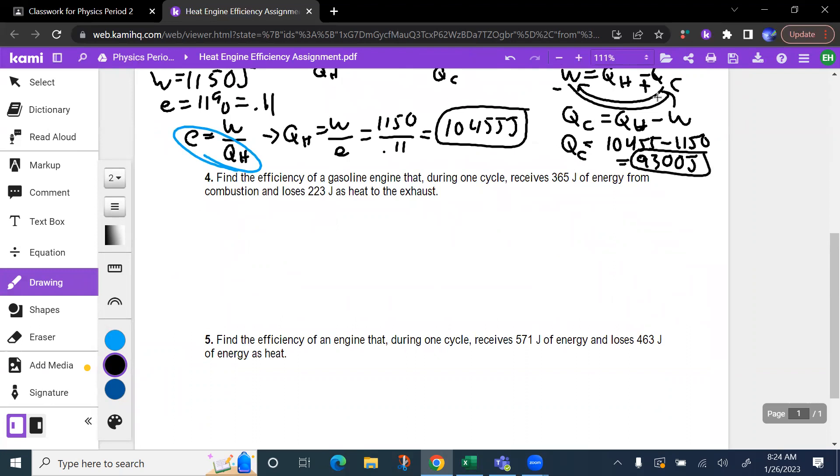Question four. Find the efficiency of a gas that during one cycle receives, that's Qh, 365 joules of energy and loses, that's Qc, 223 joules to the exhaust. So the efficiency is 1 minus Qc over Qh. So that's 1 minus 223 joules over 365 joules. So we're going to take 223 divided by 365. And we're going to go 1 minus that answer. And we get about 0.39 or 39% efficiency on that engine. Not very efficient.